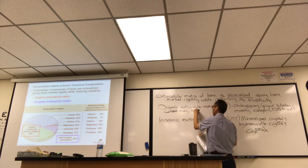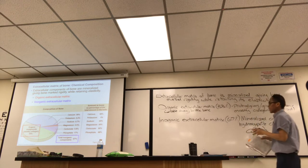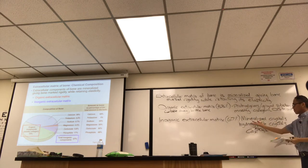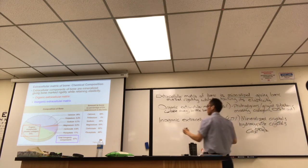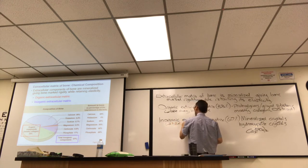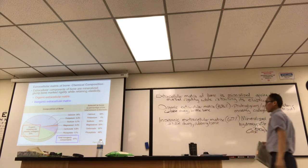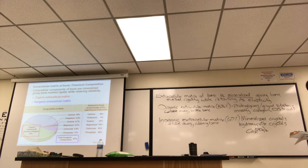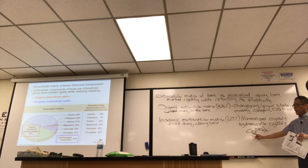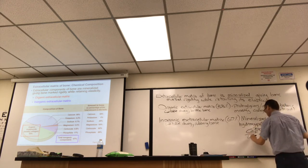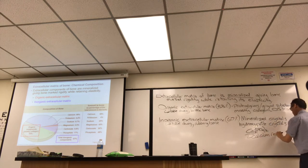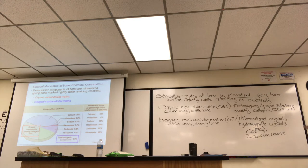Without the organic part you get brittle bone, and if you take away the mineral part, bone becomes rubbery. You need both. Bones are known for being hard, but there is an organic component. Because of these calcium phosphate crystals, bone makes a great calcium reserve for the body. Blood calcium is something the body hormonally regulates because calcium is very important for muscle function, so you can tap the bony skeleton as a source if needed.